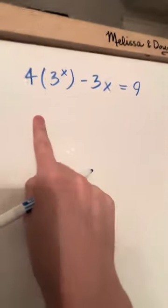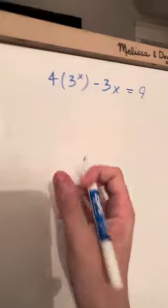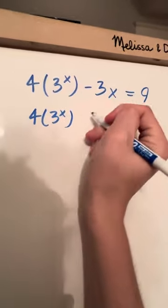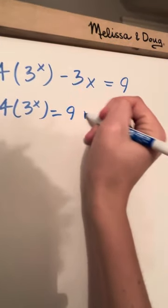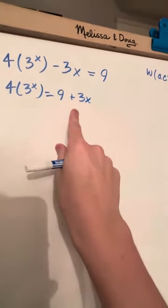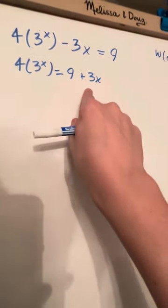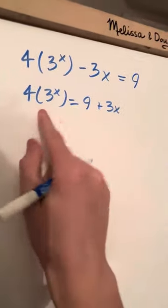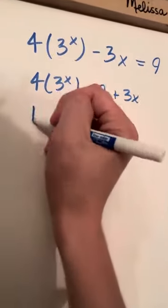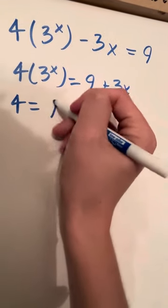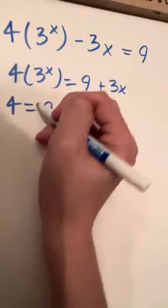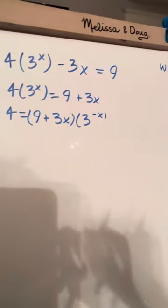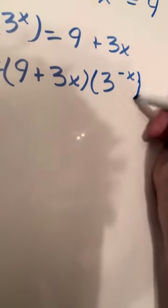So that's the form we want to get. It's going to be some complicated algebra, but what I would do is first say 4 times 3 to the power of 3x equals 9 plus 3x. And now what I would be doing right here is essentially dividing by 3x. So we're going to get 4 equals (9 plus 3x) times 3 to the power of negative x. So that's actually ideal for us.